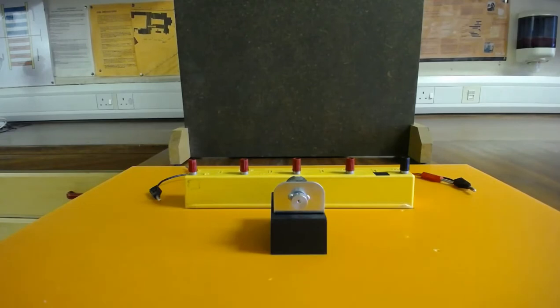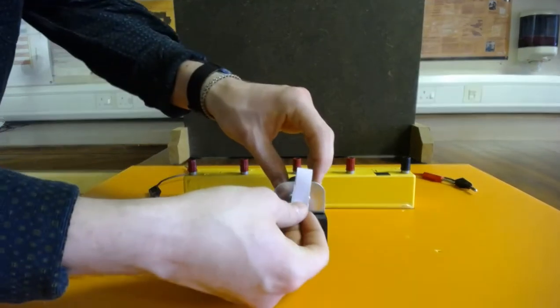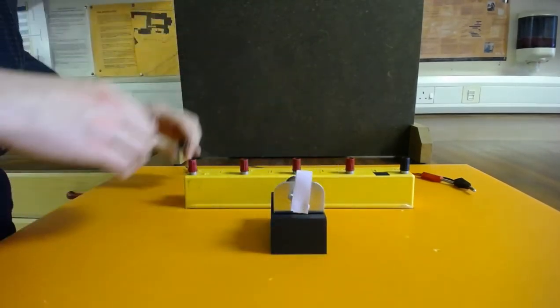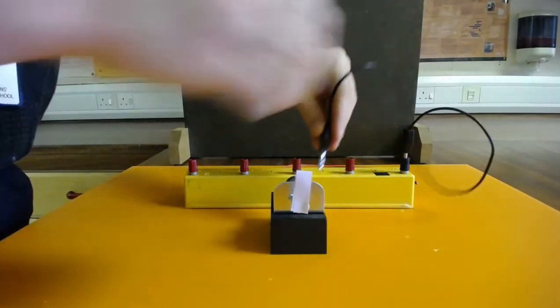Our next output transducer is the electric motor. And just so it's clear on camera what's happening, I'm going to blue tack a little bit of paper onto the motor and hopefully you should be able to see it spin. Attaching the motor to the battery board.